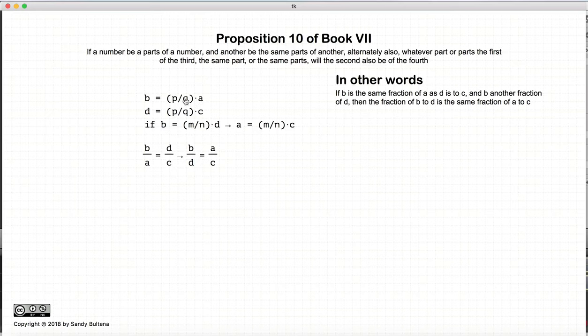So if b is some fraction of a, and d is the same fraction of c, then if b is some other fraction of d, a will also be the same fraction of c, or written this way.